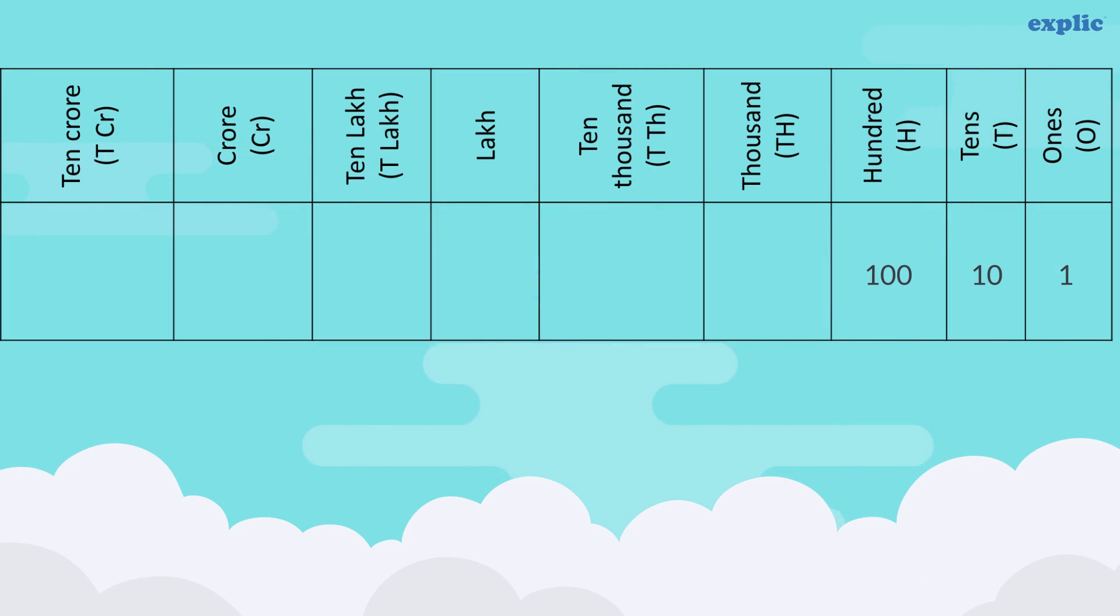Place value chart can be extended further to 1000, 10,000, lakh, 10 lakh, crore, and 10 crores, depending upon the number of digits.